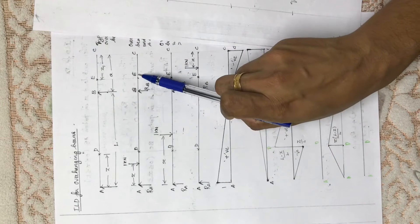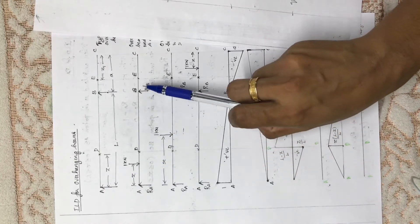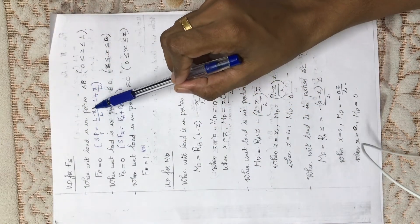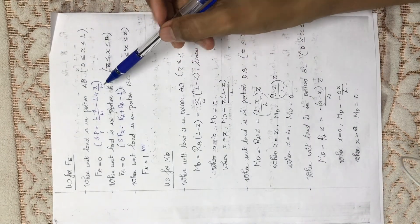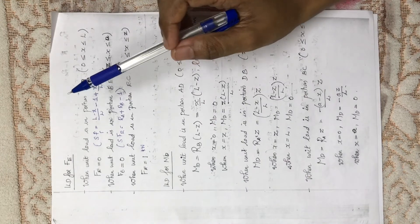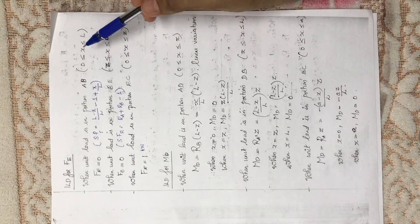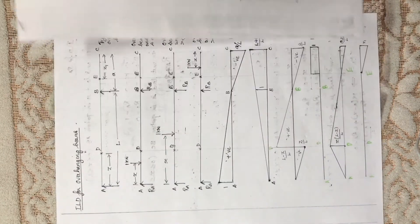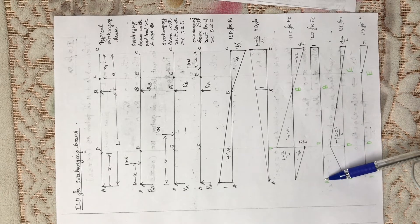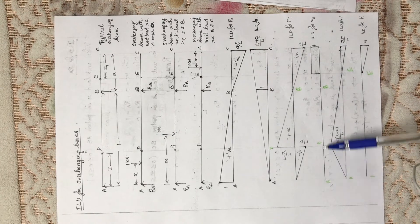We are considering the unit load in the span AD and finding the shear force at point E. As you can see in this figure, it is Ra minus 1 plus Rb. Ra is (l minus h)/l, minus 1, plus Rb which is h/l. Applying the limits: when x equals zero, F equals zero; when x equals l, F also equals zero. So the value of Fv at both points zero and l is zero, and we can draw the influence line diagram for Fv as a straight line.